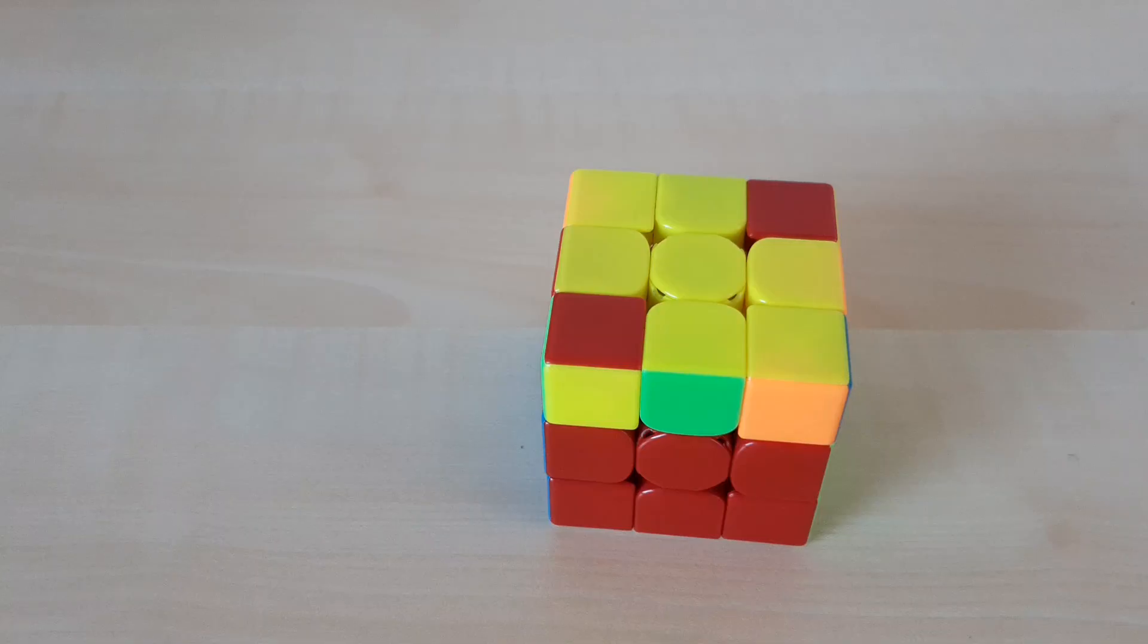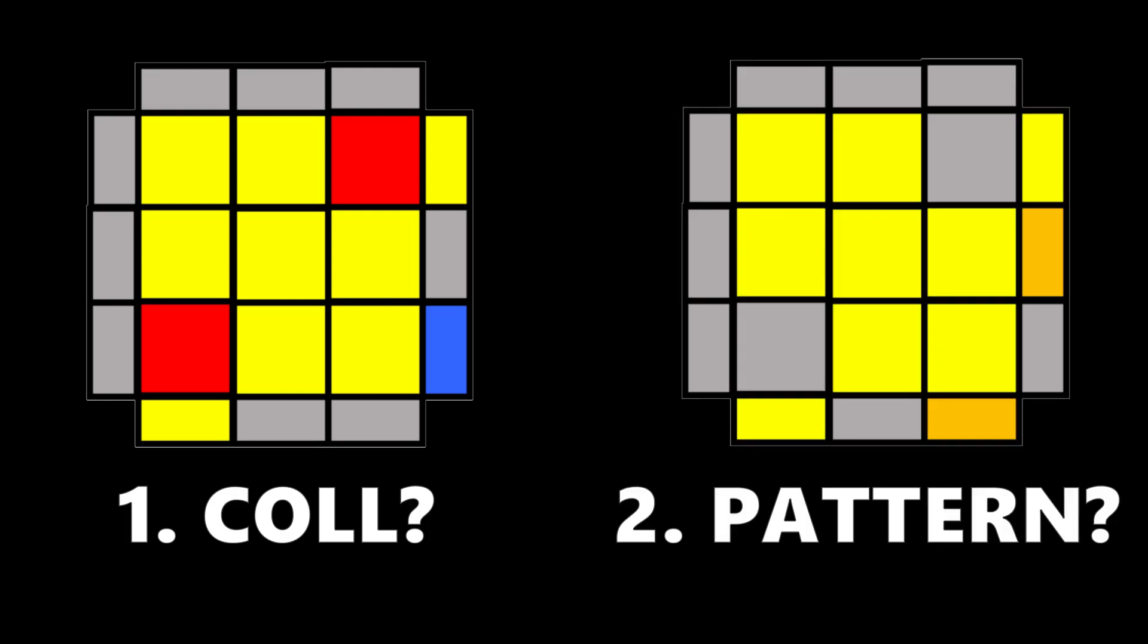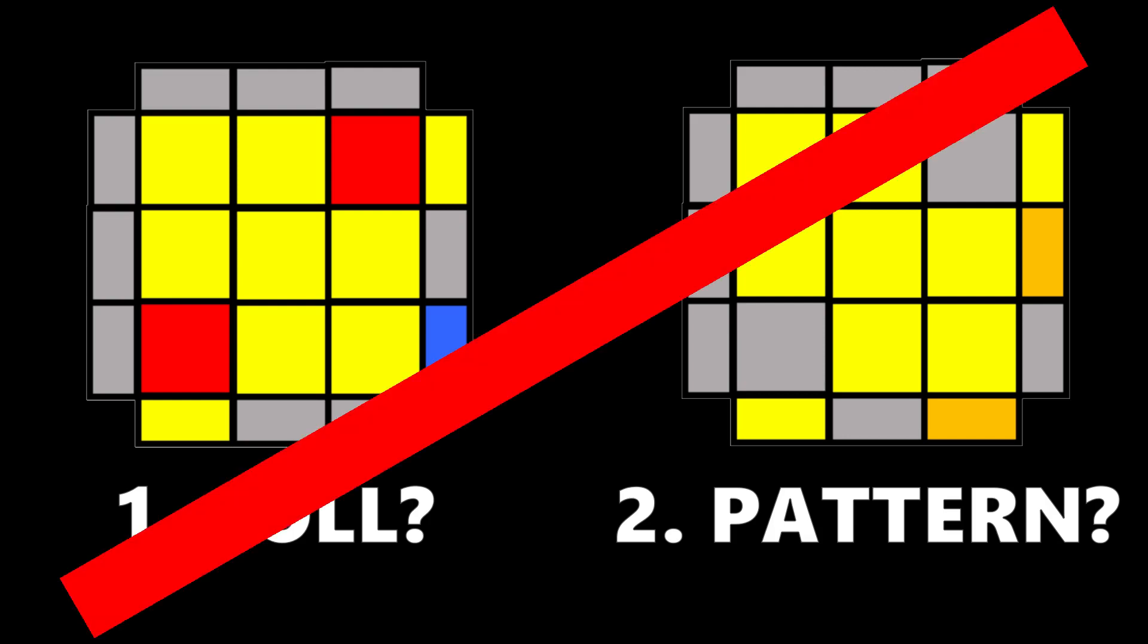One mistake I did when I started with CBLL is that I only looked at the corners to recognize which exact COLL case I have, and then I looked for characteristics to identify which of the 12 cases of that COLL I have. That means I had to look twice.